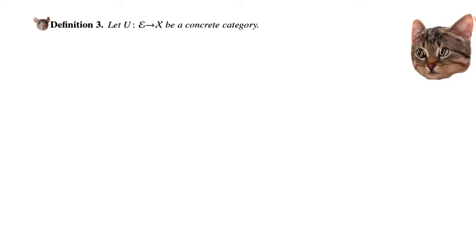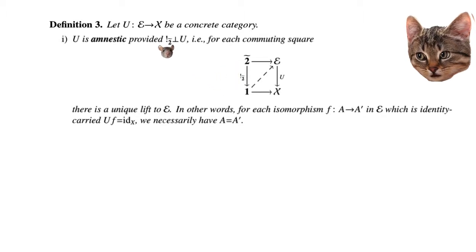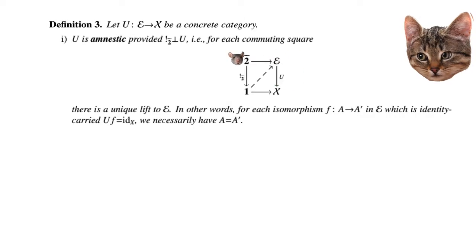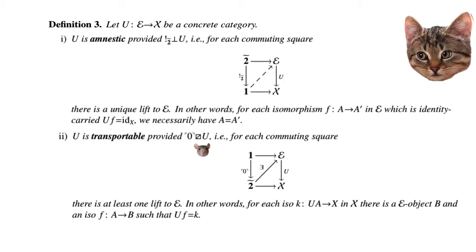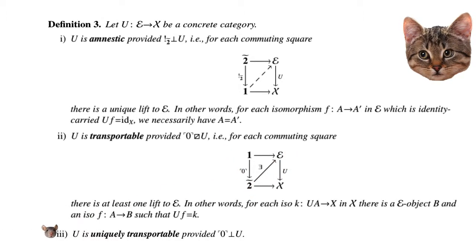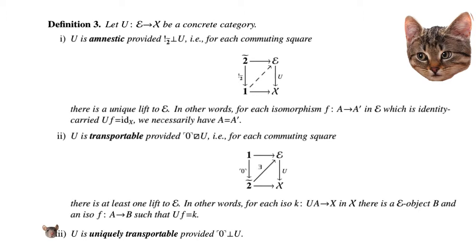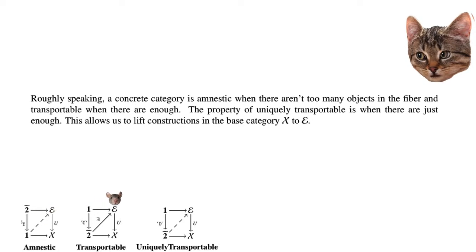The next definition: for a concrete category U: E → X, we say that U is amnestic, or that the concrete category is amnestic, provided that the unique functor from 2̃ to 1 is orthogonal to U — i.e., for each commuting square there is a unique lift to E. We say that U is transportable provided that the inclusion of object 0 in 2̃ has a lifting property with respect to U, meaning that given a commuting diagram there exists at least one lift. We say it is uniquely transportable provided there exists exactly one lift, so it is orthogonal.